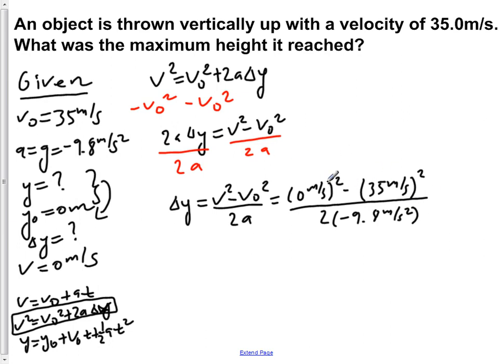If we carry out the squares and subtraction on the top, we find that delta y equals negative 1,225 meters squared per second squared over 2 times negative 9.8 meters per second squared. The negatives cancel out to give us a positive value. If we multiply 2 times 9.8 and then divide 1,225 by that value...